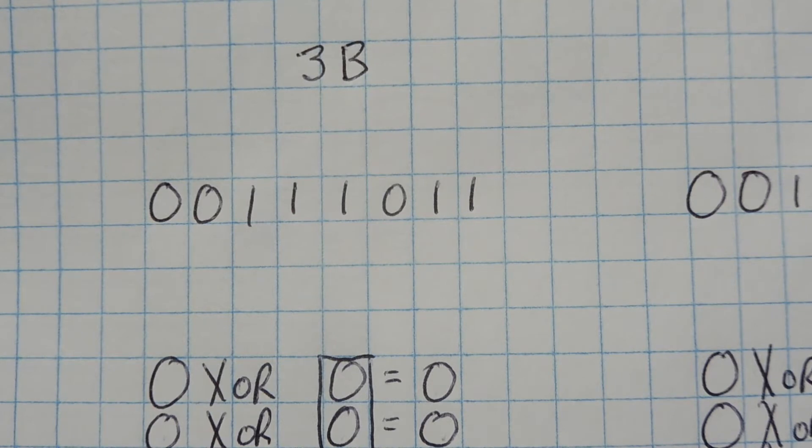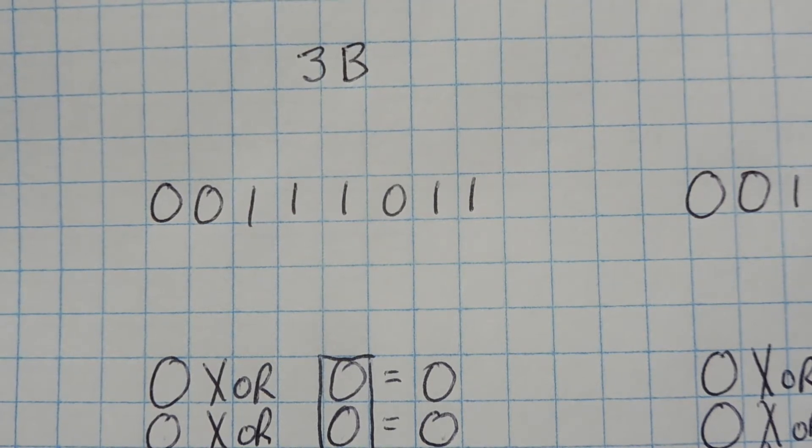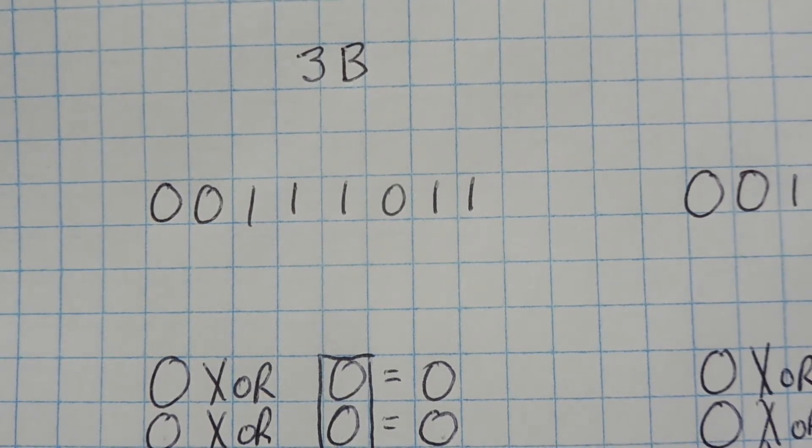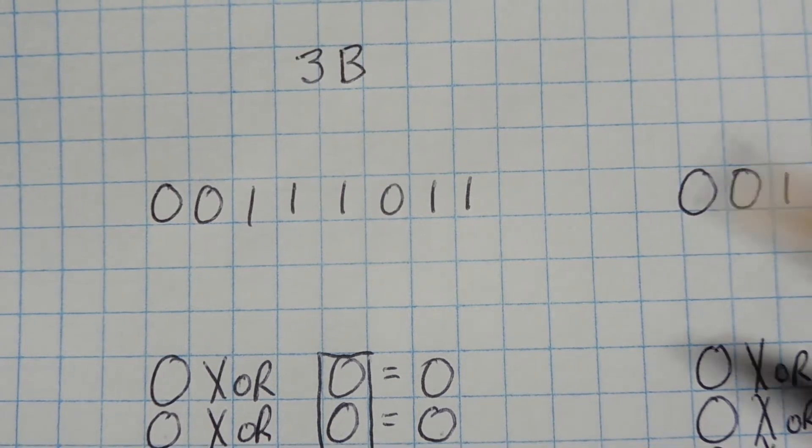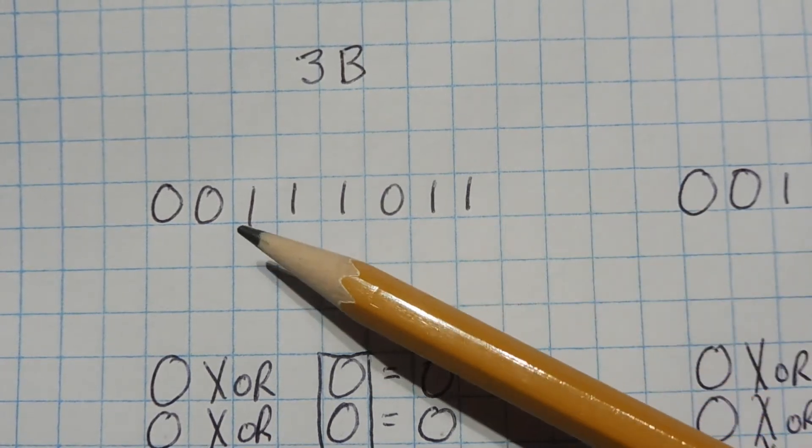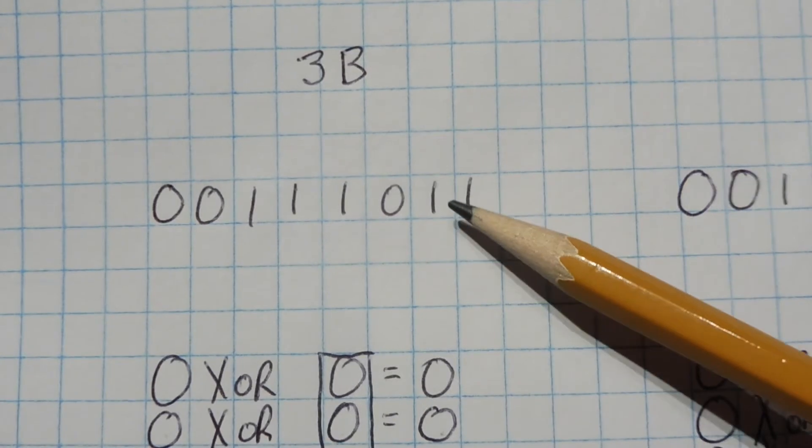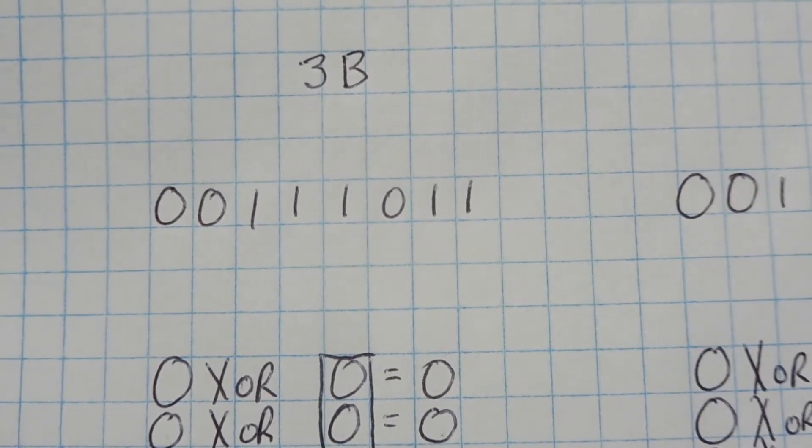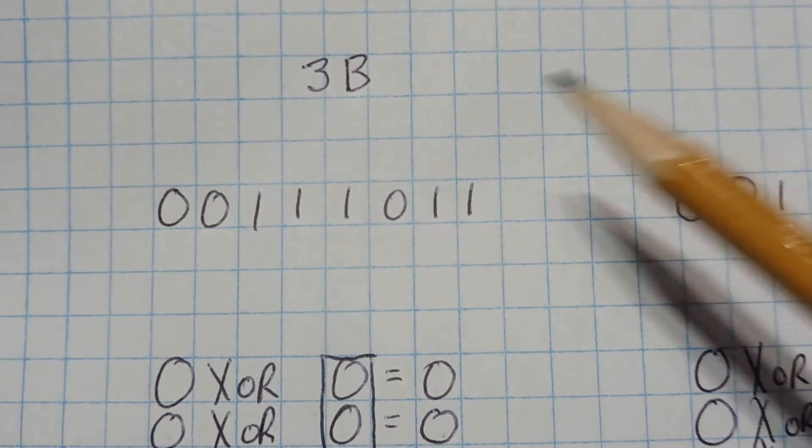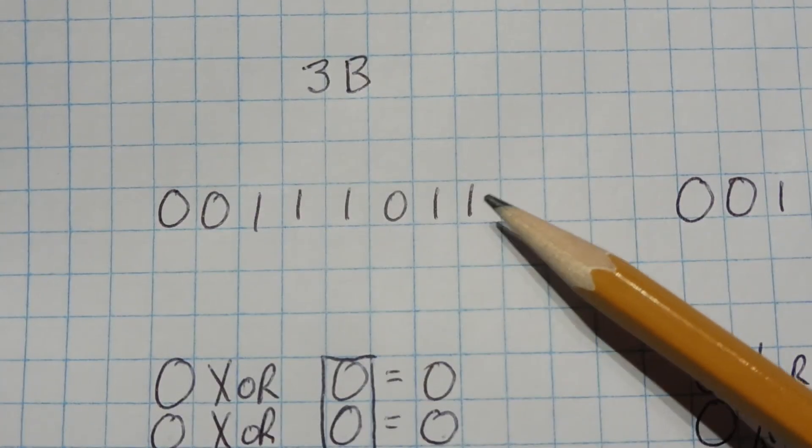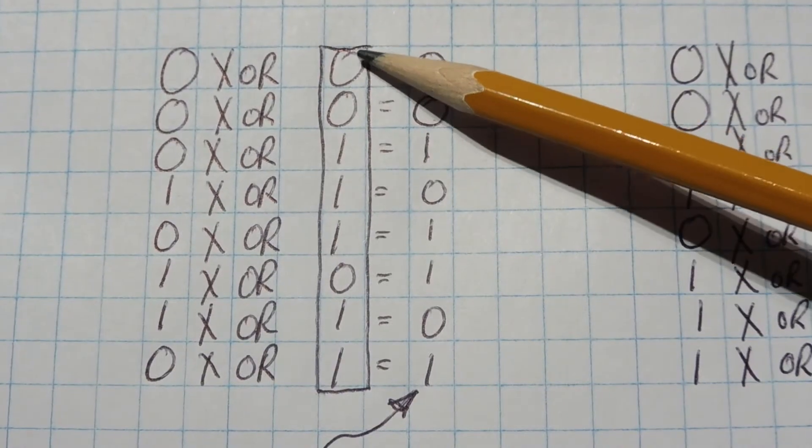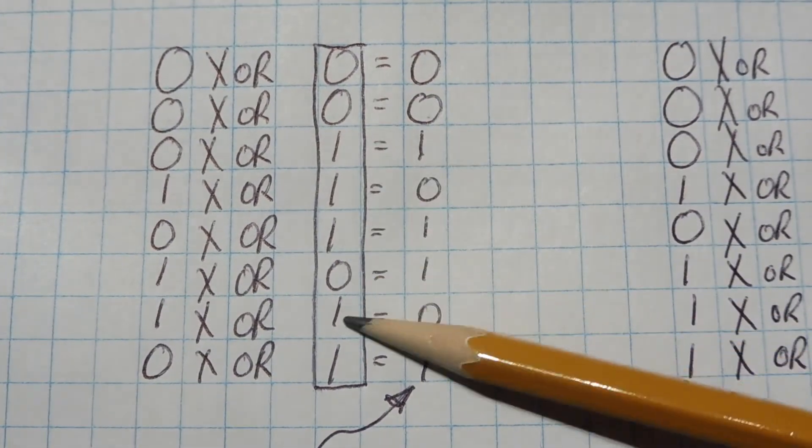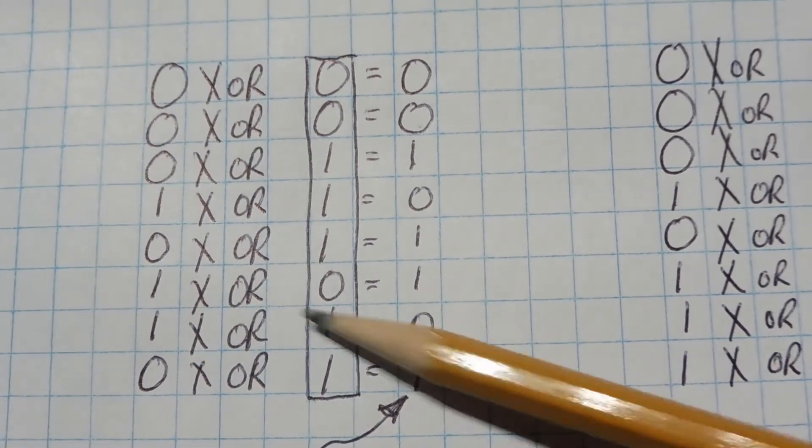OK, here's one way to calculate if the number of ones in a value is even or odd. And we'll use the value of 3B. You can see here in binary. And if we count the number of ones, 1, 2, 3, 4, 5, that's odd. So it's easy for us to determine. But how do we do that in a microcontroller? So we'll take the 3B value in binary and we'll put it in column form. So we can see it here. 0, 0, 1, 1, 1, 0, 1, 1. And we start off with a 0.